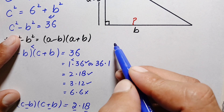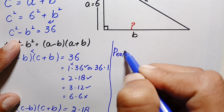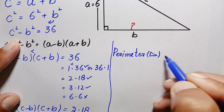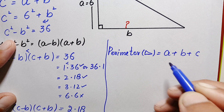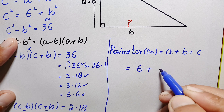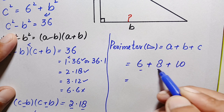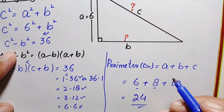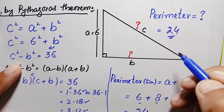Now we can easily find the perimeter of this right angle triangle. The perimeter equals a + b + c. Substituting the values: a = 6, b = 8, c = 10. Summing these: 6 + 8 = 14, and 14 + 10 = 24. Therefore the perimeter of this right angle triangle is 24 units, which is our final answer.